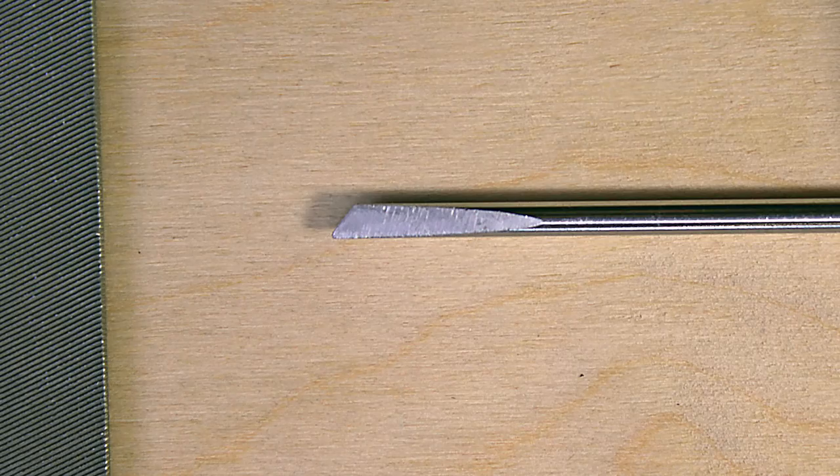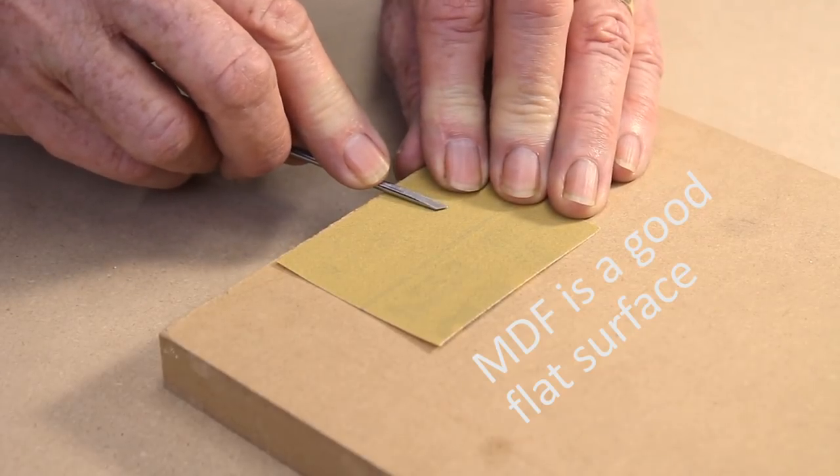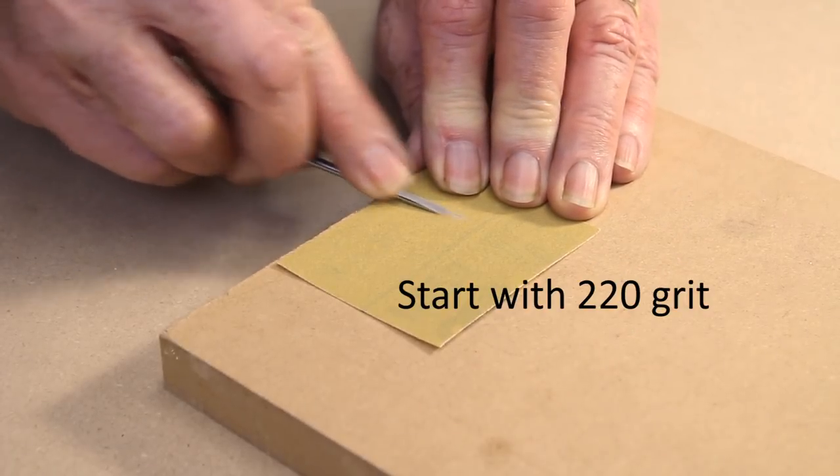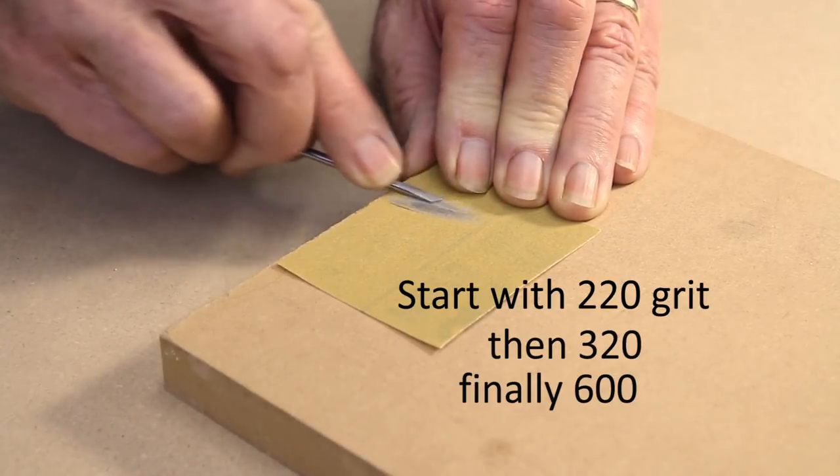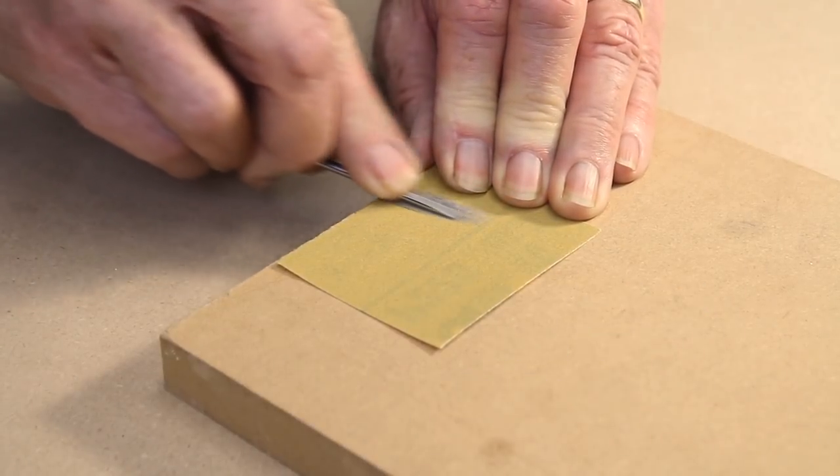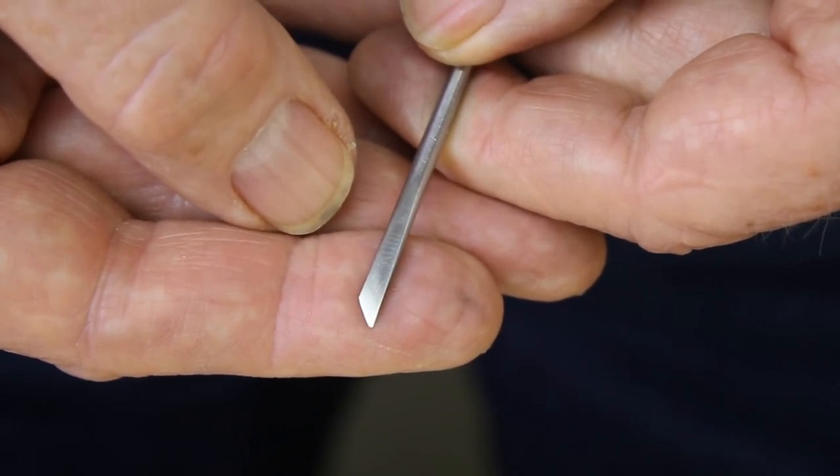The file will leave a rough surface. Sand the surfaces smooth, starting with 220 grit. Move on to 320 grit and finish with 600 grit sandpaper, which will leave a reasonably polished surface. At this point, the edge should be well shaped and almost sharp.